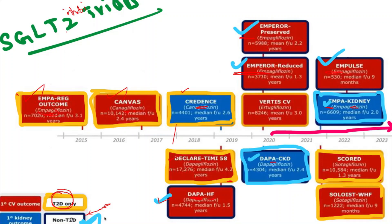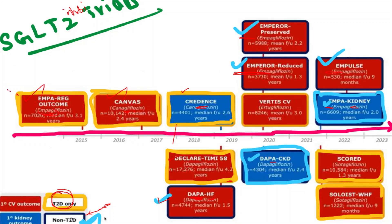Out of all these, which are the most important trials a medicine resident or nephrology resident should be aware of? Starting from the EMPA-REG OUTCOME trial, CANVAS trial, CREDENCE trial, DECLARE-TIMI, DAPA-HF, DAPA-CKD, and EMPA-KIDNEY — these are all the important trials the resident should be aware of.